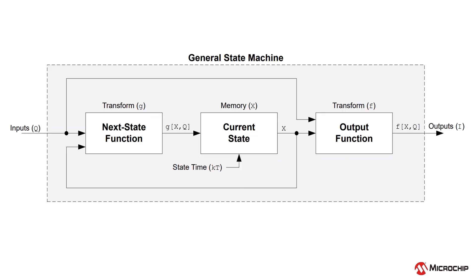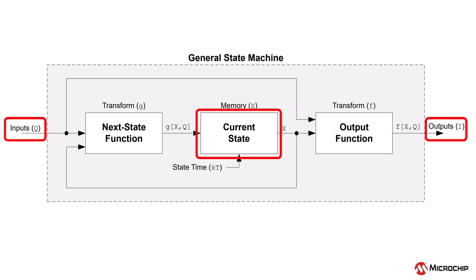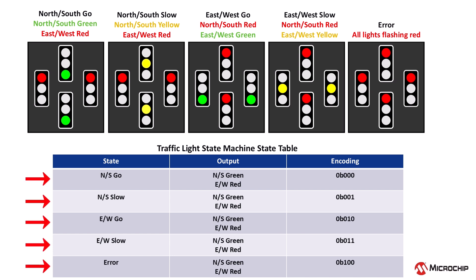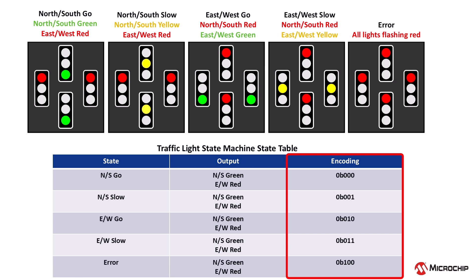This functionality for the traffic light can be implemented as a state machine. The first step in solving a state machine is to identify the possible states, inputs, and outputs of the system. This system consists of five distinct states, each representing a specific traffic condition. To efficiently encode these states, we will use a three-bit scheme.